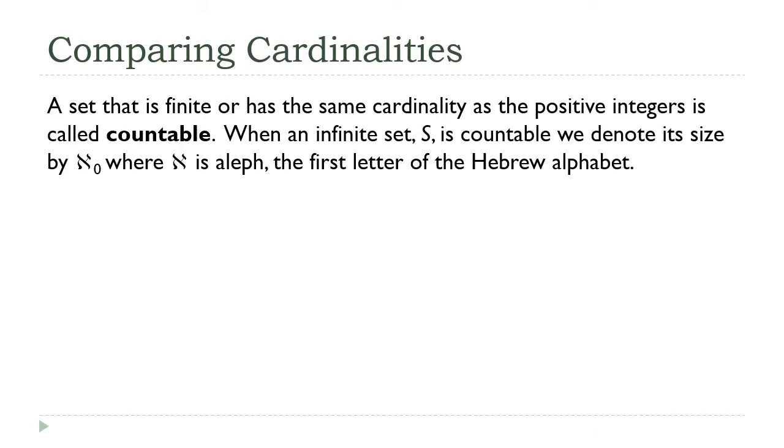So let's see if we can start to pin this down. Exactly how big is an infinite set? Well, an infinite set that has the cardinality of the positive integers is what we call countable. If I can make a one-to-one correspondence between my set and the unbounded set of positive integers, then we're going to call it countable, and there's a special symbol to represent that size.